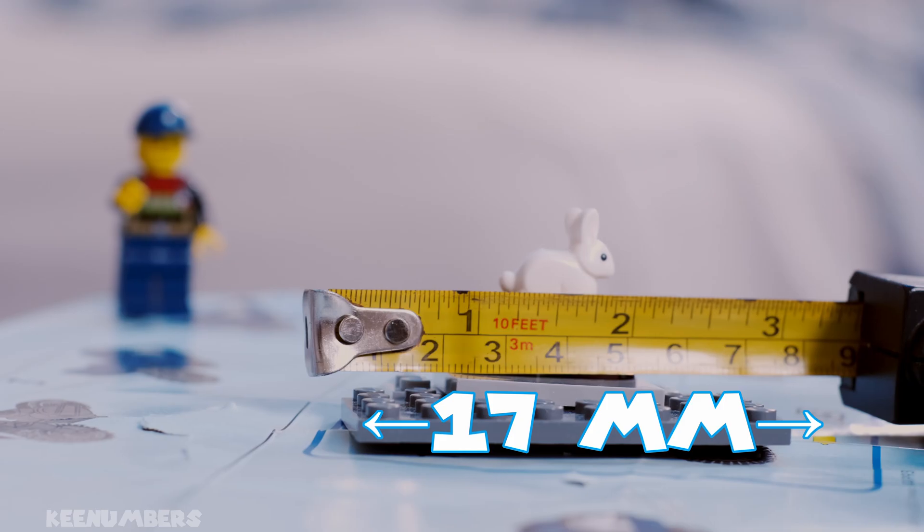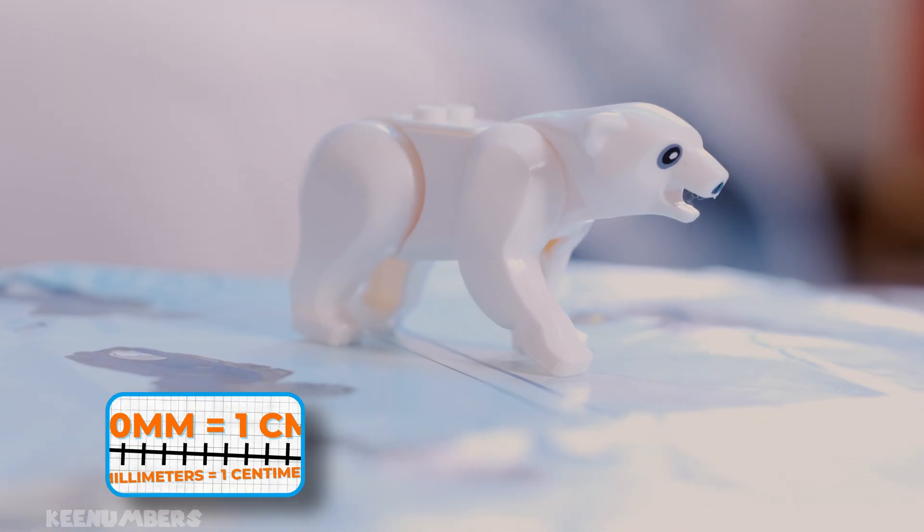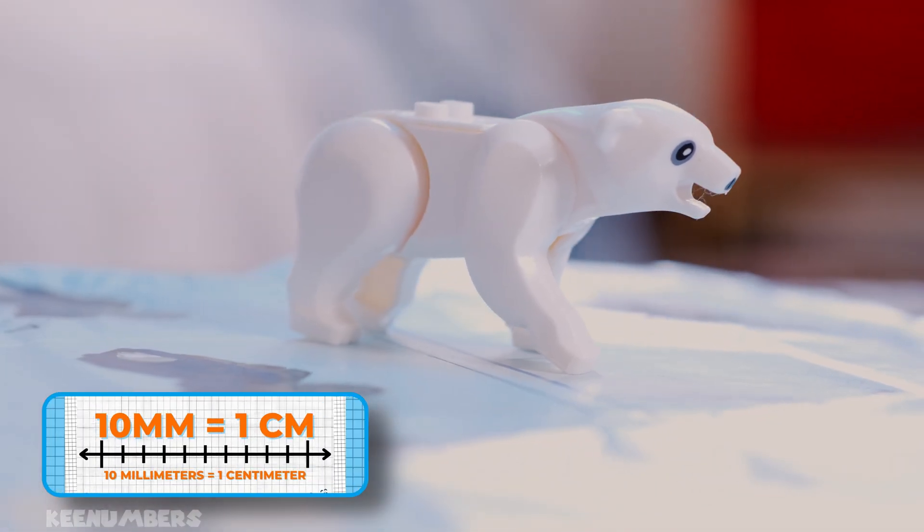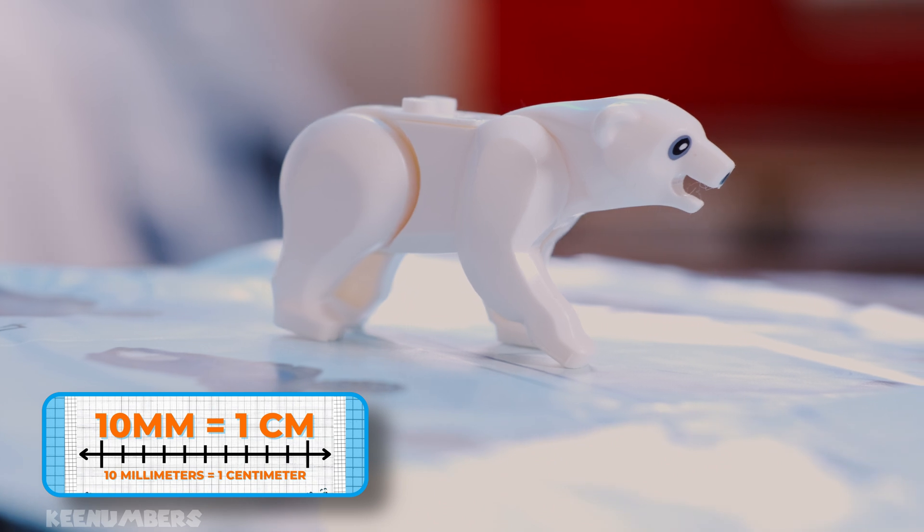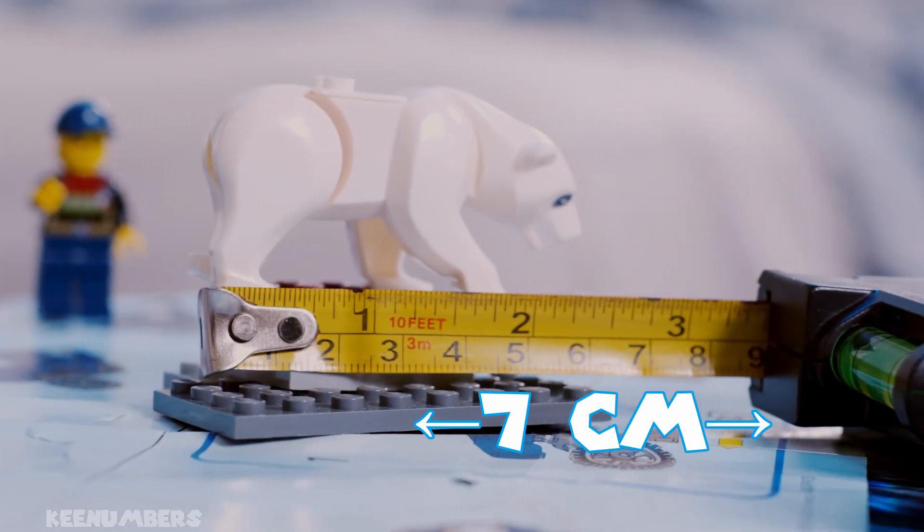This small rabbit is 17 millimeters. This bear is seven centimeters. Seven centimeters - there are 10 millimeters in each centimeter, so that's 70 millimeters.